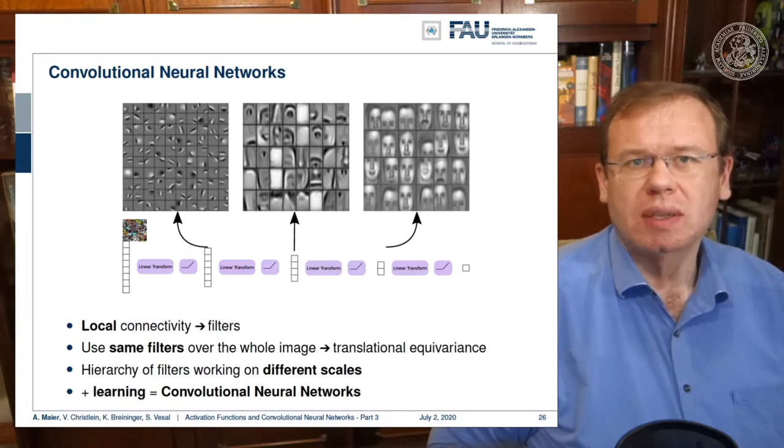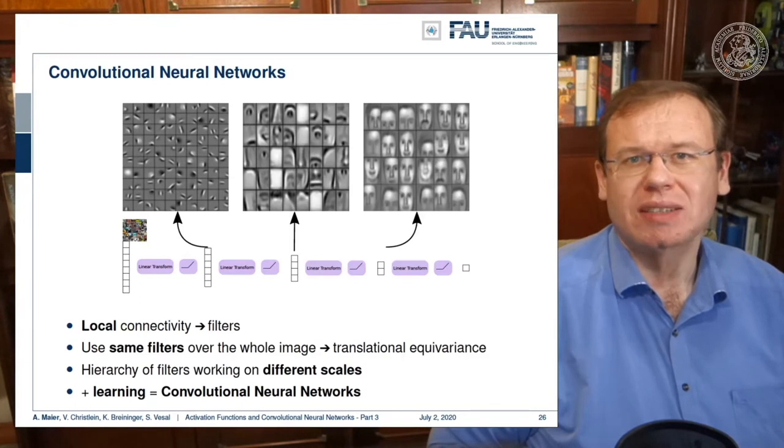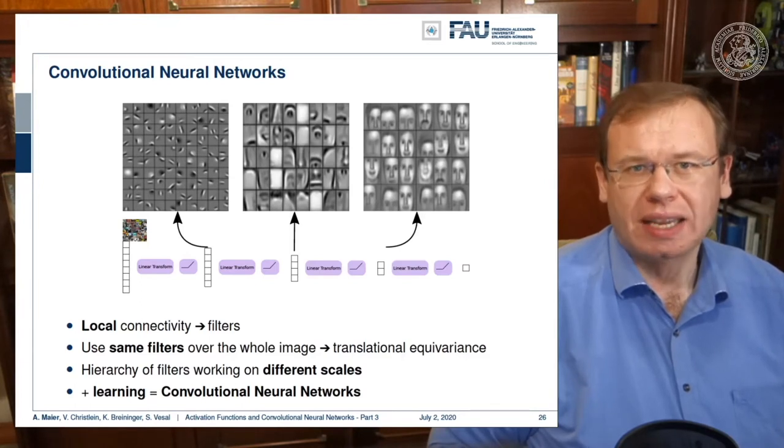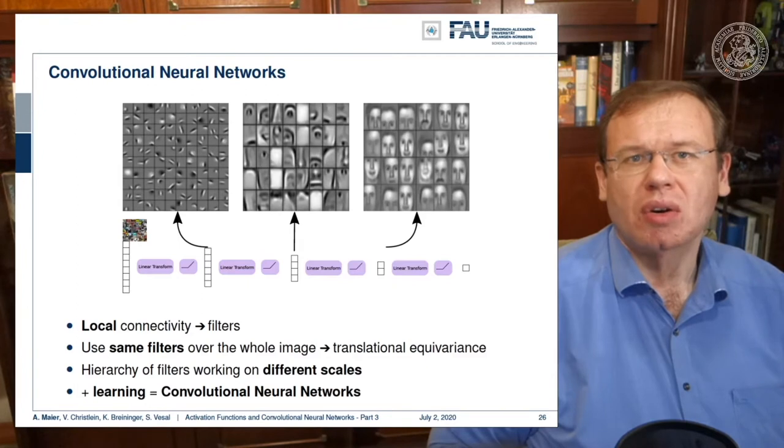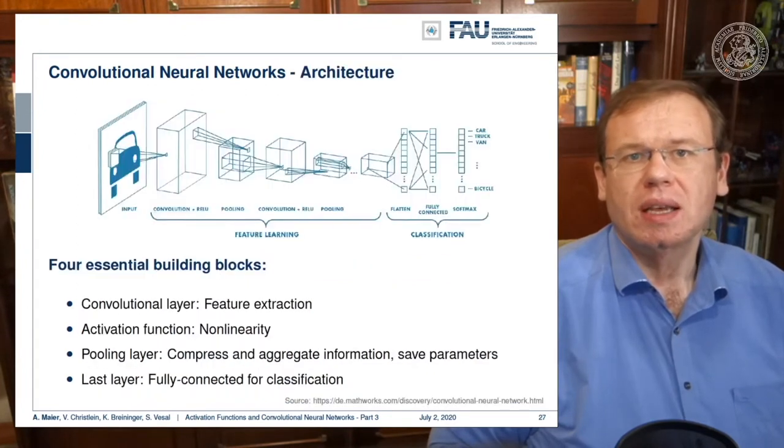Then in the intermediate layers you'll find more abstract representations. Here we find eyes, noses, and so on. In the higher layers you then really find receptors, for example faces. We want to have local sensitivity but then scale them over the entire network.